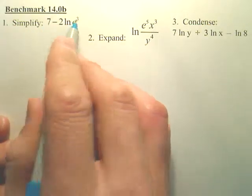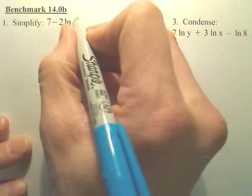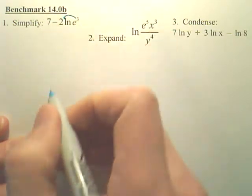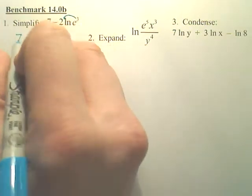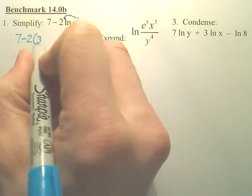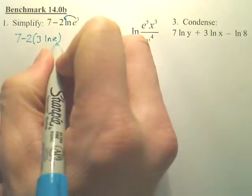For number one here, if I want to simplify this, the first thing I do is take this 3 and bring it in front of the ln. So I got 7 minus 2 times 3 ln e.